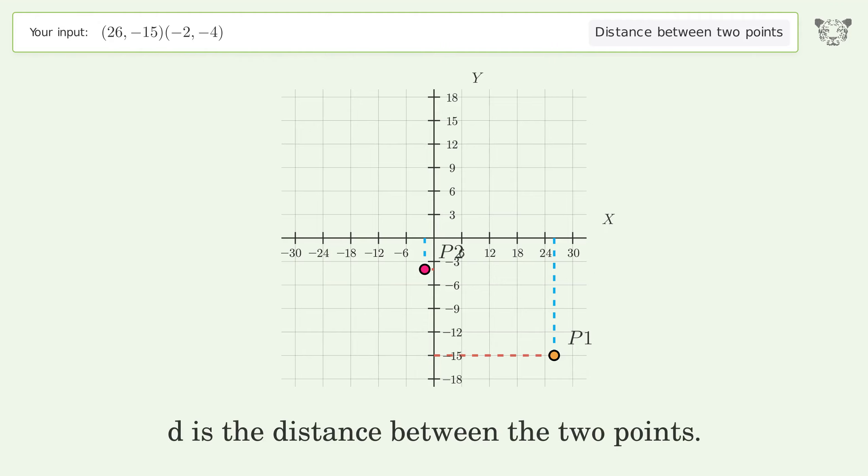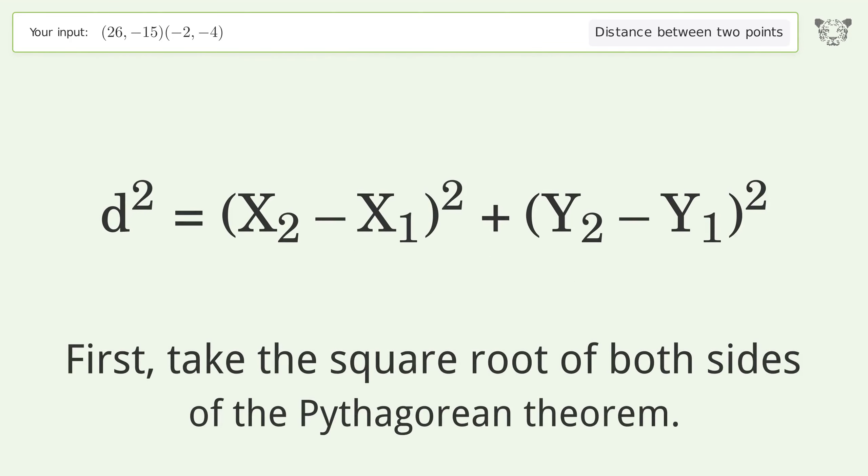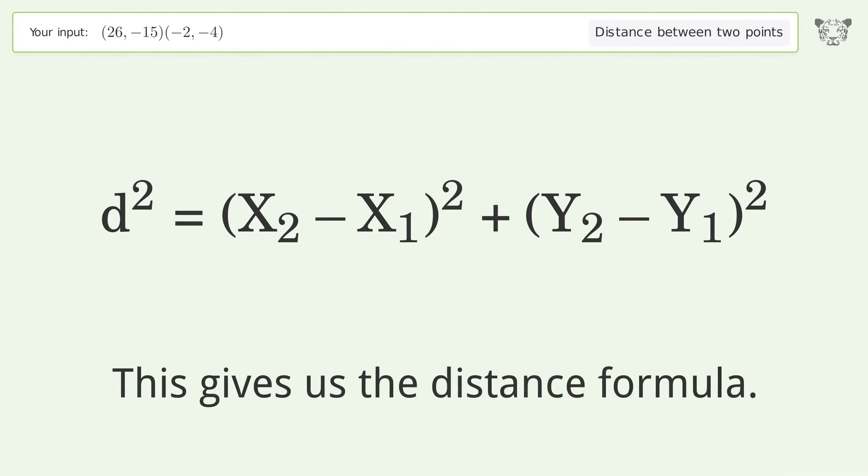d is the distance between the two points. First, take the square root of both sides of the Pythagorean theorem. This gives us the distance formula.